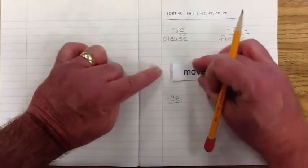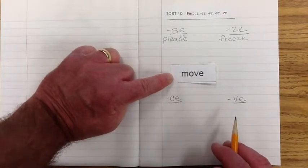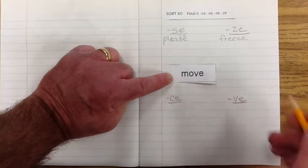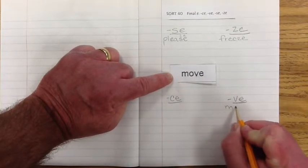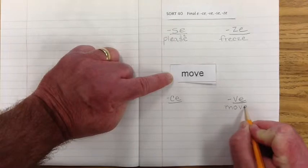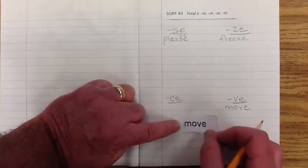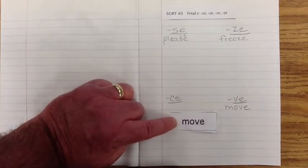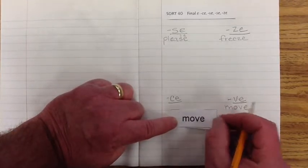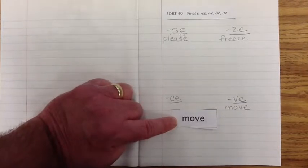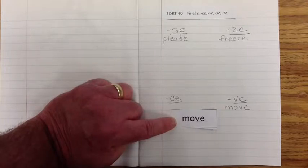Next word is... Say the word move with me. Move. Move. And it has what at the end? It has the E. And before it has the V. So, it's going to go under this one. Move. Move. We need to move so we don't get hit with the ball. If we're at a baseball stadium, right? We don't want to get too close to the action. We don't get hit with the ball. All right. So, we have to pay attention, I guess, at baseball games. So, you don't get hit. And if you need to move, you better move quickly.